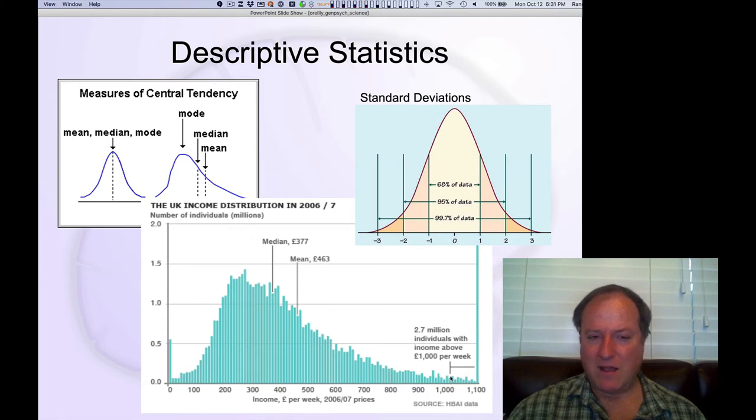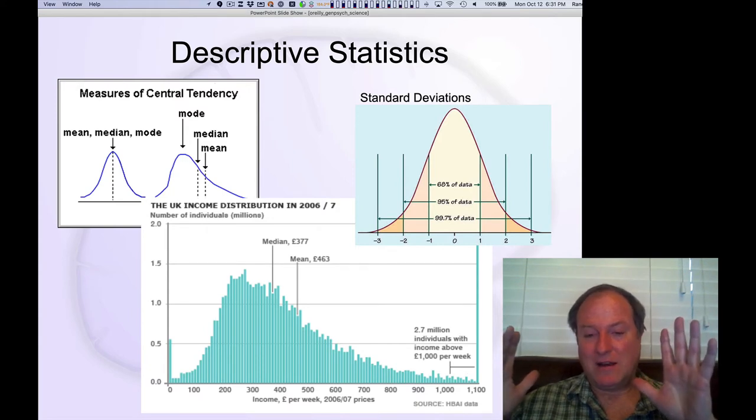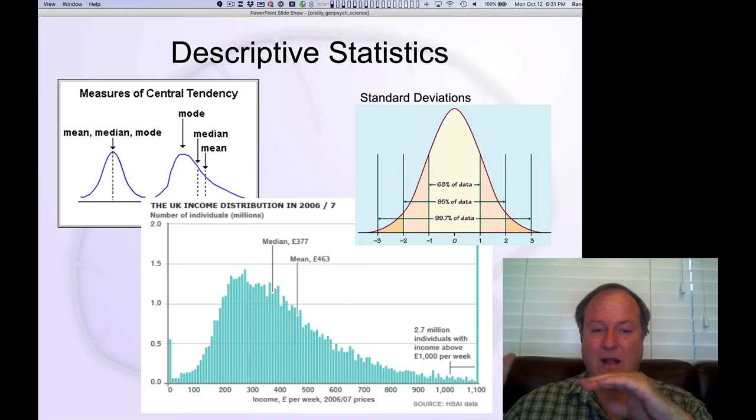here's real data from UK income distribution - how much different people made in the United Kingdom. You can see that the mean, the median, and the mode are actually at different points. The mean is the average - you take each value, add it up, and divide by the number of values. That tends to be skewed by the high end in a skewed distribution. So we say this is a right-skewed distribution with a large tail. This is income inequality. It means that there's a few people who are making a lot more money than everybody else, and that skews the mean upwards.